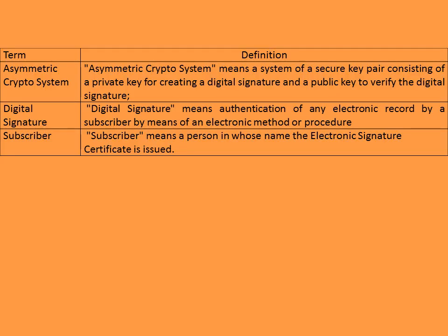Though not mandatory, you can write this additional point to impress the examiner. Asymmetric cryptosystem is a system of a secure key consisting of a private key for creating a digital signature and a public key to verify the digital signature.